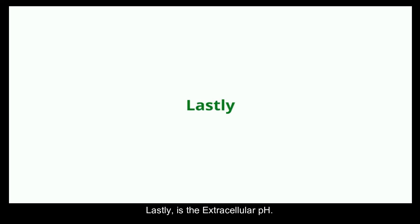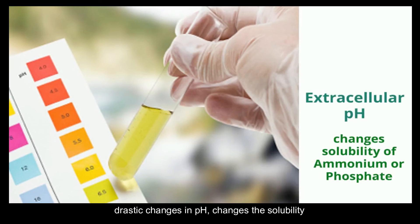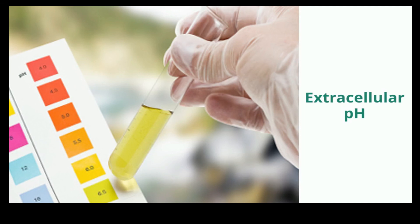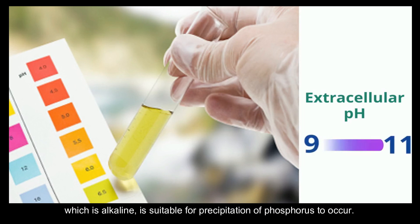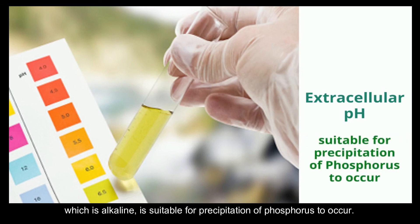And lastly, is the extracellular pH. Drastic changes in pH change the solubility of ammonium or phosphate present in the substrate medium. A pH value between 9 to 11, which is alkaline, is suitable for precipitation of phosphorus to occur.